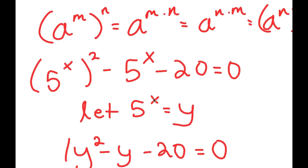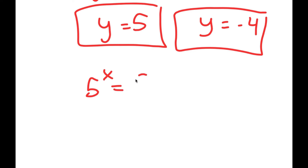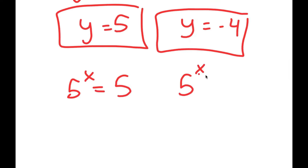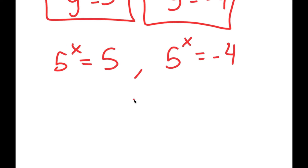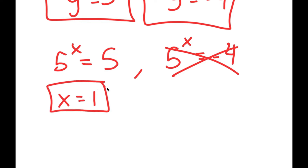Now, remember we let 5 to the power of x equal y, so this means I get two equations: 5 to the power of x equals 5, and 5 to the power of x equals negative 4. For 5^x equals negative 4 — we can't raise a positive number to any power and get a negative number, so this equation has no solution. For 5^x equals 5, we can see that 5 to the power of 1 equals 5, because anything to the power of 1 is itself. So x equals 1 is my solution.